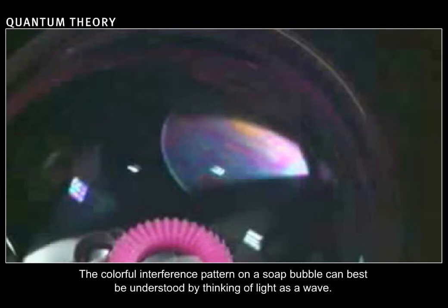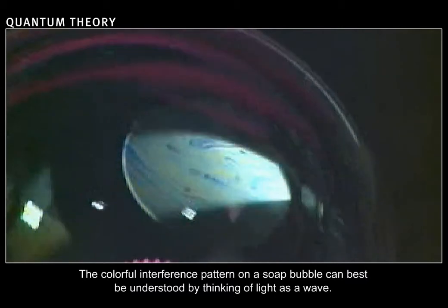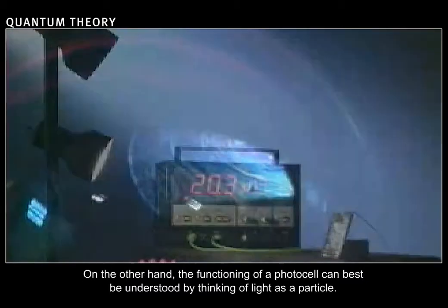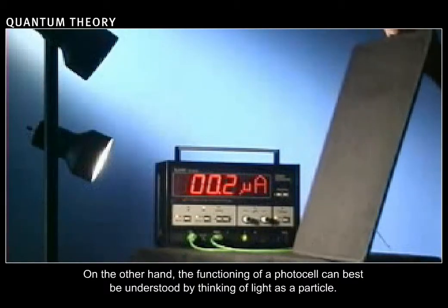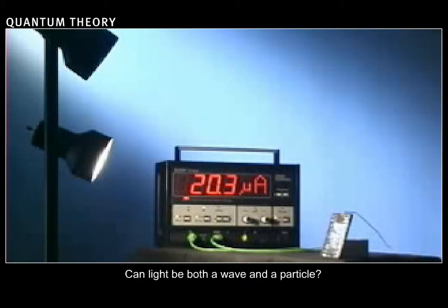The colorful interference pattern on a soap bubble can best be understood by thinking of light as a wave. On the other hand, the functioning of a photocell can best be understood by thinking of light as a particle. Can light be both a wave and a particle?